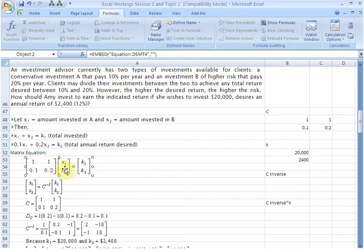Here coefficient of X1 from the second equation is 0.1 and coefficient of X2 from the second equation is 0.2. In this vector, we have written the variables X1 and X2, and their product should be equal to the K vector, K1 and K2 being the elements.